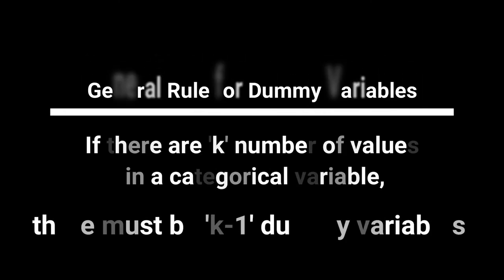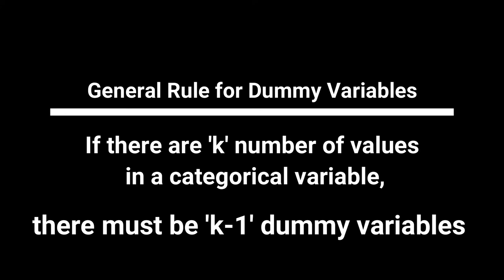A general rule for dummy variables is that if there are k number of values in a categorical variable, there must be k-1 dummy variables.